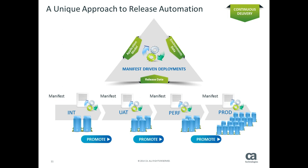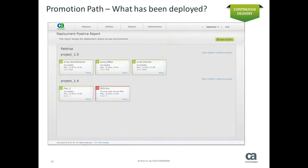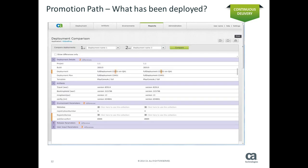Once a deployment is done, a simple screenshot indicates what's been deployed. I now have a promotion path or pipeline that outlines what's actually happened — a clear picture of what has been rolled out in each different environment. If there's a problem, I can very quickly do a compare between one deployment and another in a different environment to figure out what's different. Something very simple like using a different configuration file, which tends to get overlooked, can actually be picked up very quickly and very easily.